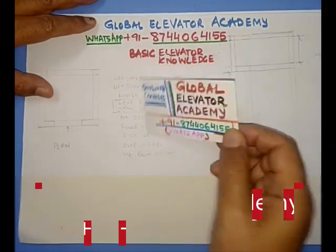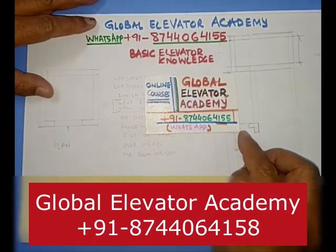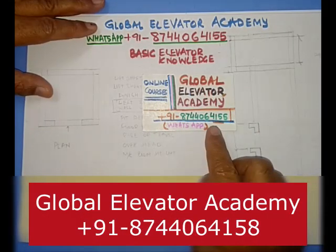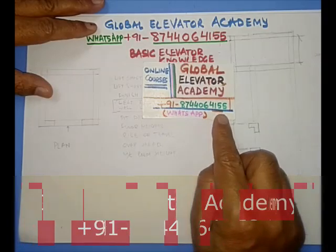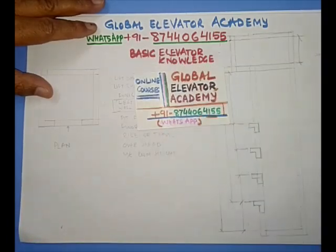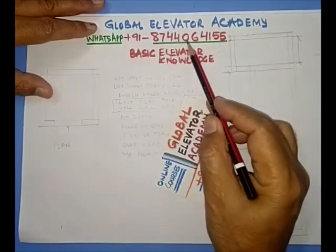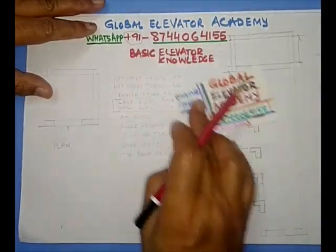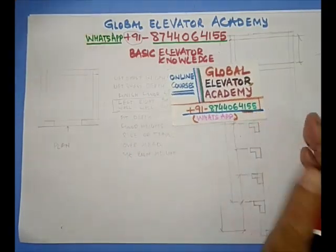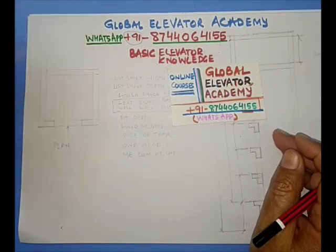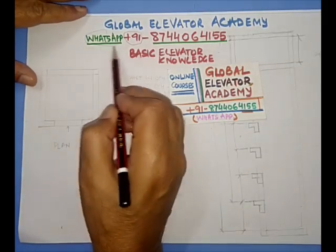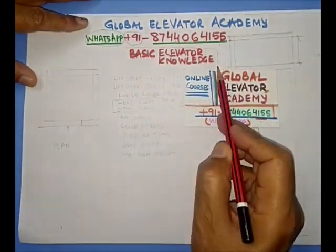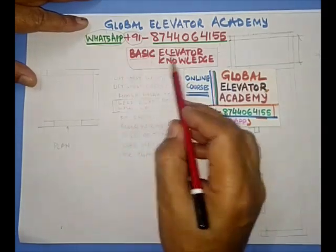Hey friends, welcome to Global Elevator Academy. You know that if you have any doubt, any question, you can always send a WhatsApp to us on this number 8714-06-4155 and this is our international ISD code. So in case you have any doubt, please do send us a WhatsApp. And today we are going to have a special session in English for basic elevator knowledge.